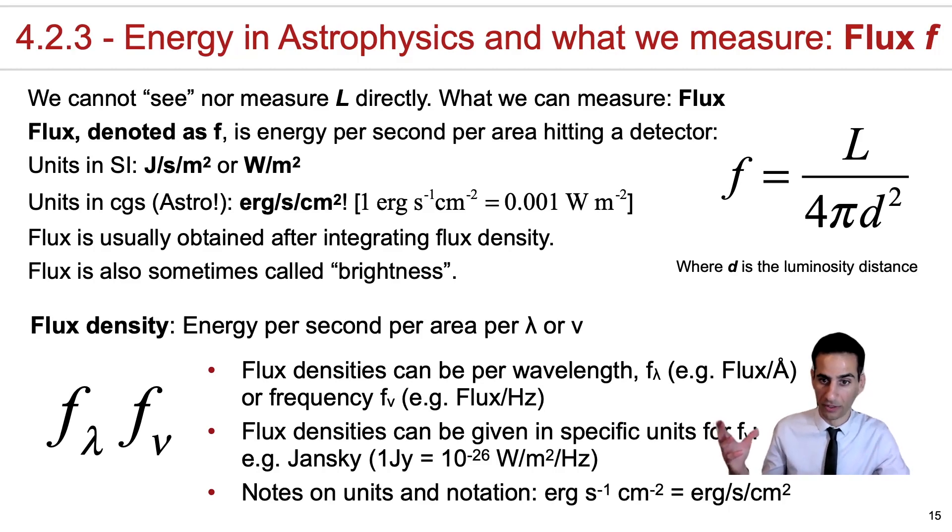So if you're talking about a flux density in terms of f lambda, you're typically looking at erg per second per centimeter squared per angstrom. And if you're looking at something in terms of f nu, you're looking at erg per second per centimeter squared per hertz. And below, you just have very quick, clear notation that erg s minus one centimeter minus two really means erg per second per centimeter squared, just to be clear.